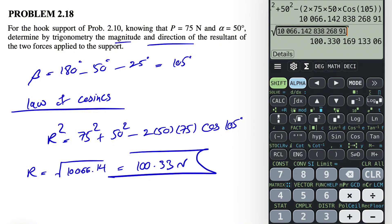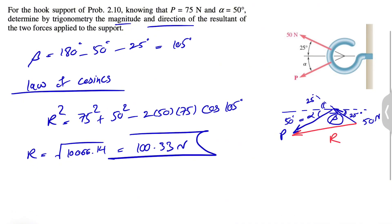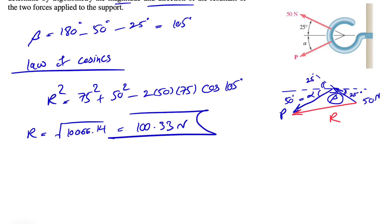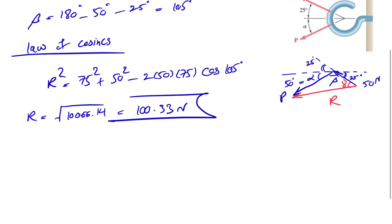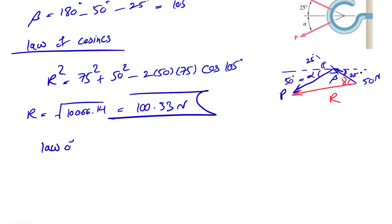So we found the magnitude of R, and now we have to figure out the direction. If we do the law of sin, we can call the other angle in this triangle, maybe this angle here, gamma. And let's see how we can find gamma.